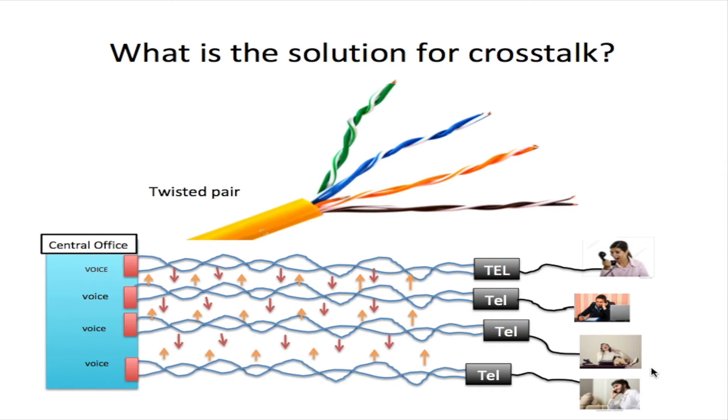So these users here will not be able to hear each other. These arrows here indicate the electromagnetic induction which is sent out. But when it's sent out and goes into the wire, it is cancelled by these twists in the wire. So users here should not be able to hear the crosstalk from the parallel line.